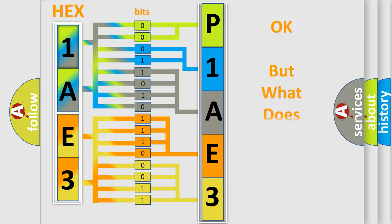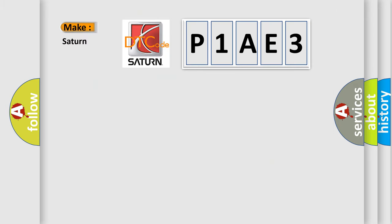The number itself does not make sense to us if we cannot assign information about what it actually expresses. So, what does the diagnostic trouble code P1AE3 interpret specifically for Saturn car manufacturers?